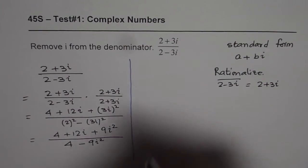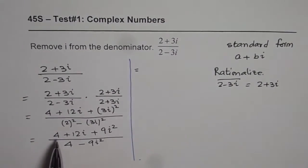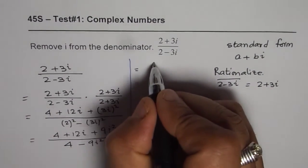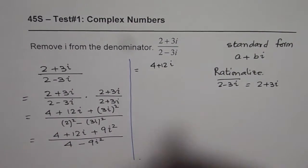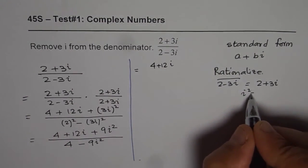Okay, so now we have 4 plus 12i. i square is negative 1. So we know i square is negative 1.